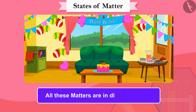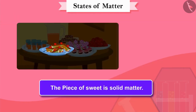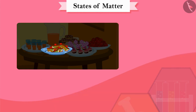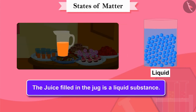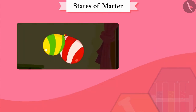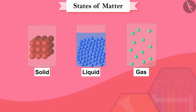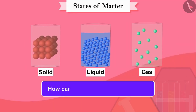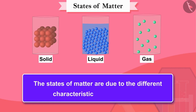All these matters are in different states. The piece of sweet is solid matter, the juice filled in the jug is a liquid substance, and the air filled in the balloons is a gaseous substance. Now you may be thinking — how can we find the states of matter? The states of matter are due to the different characteristics of its particles.